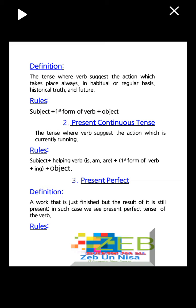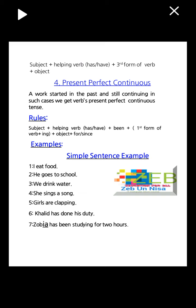Rules for present perfect: subject plus helping verb has/have plus third form of verb plus object. Fourth: present perfect continuous — a work started in the past and still continuing; in such case we use present perfect continuous tense. Rules: subject plus helping verb has/have plus been plus first form of verb plus -ing plus object plus for/since.